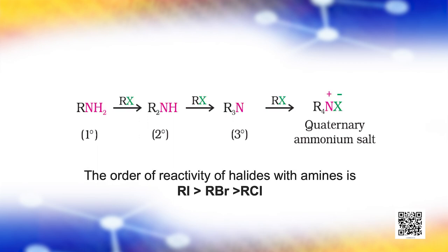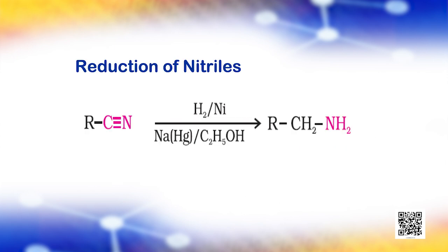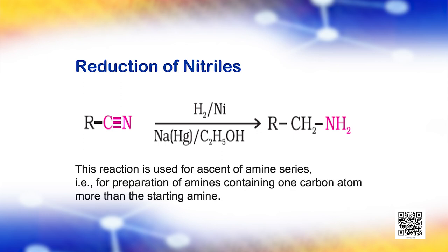The order of reactivity of halides with amines is RI greater than RBr greater than RCl. Nitriles on reduction with lithium aluminium hydride (LiAlH4) or catalytic hydrogenation produce primary amines. This reaction is used for ascent of amine series, that is for preparation of amines containing one carbon atom more than the starting amine.